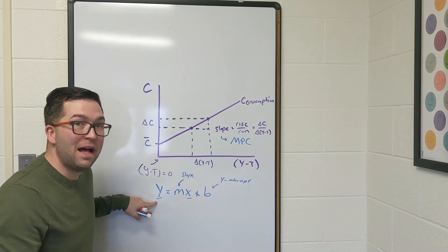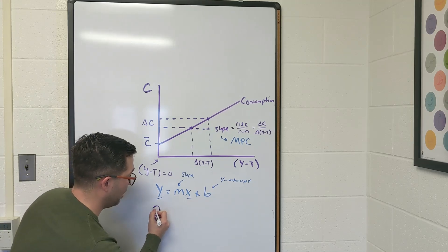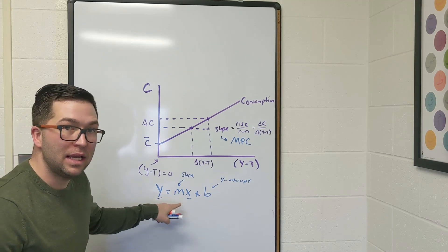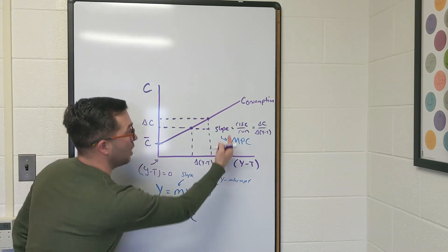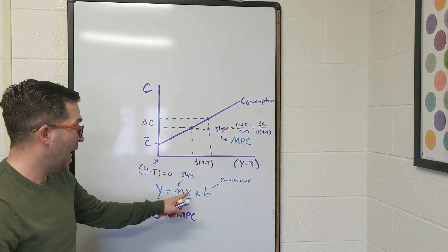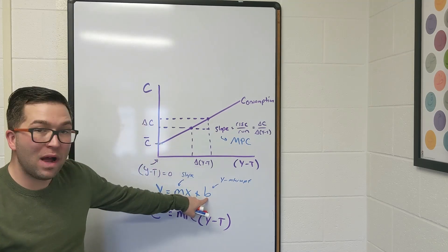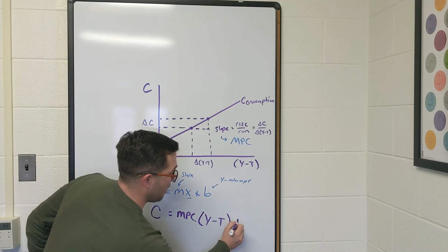Start by what is our y value. That's the vertical axis, so I know that consumption equals m is my slope, which is mpc. We did that a little earlier. x is my y minus t, and then my y-intercept, where does it cross here when x is equal to zero? It's going to be c-bar.